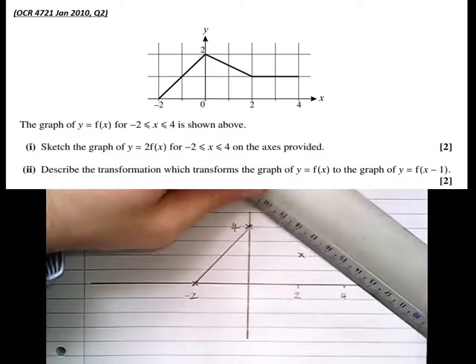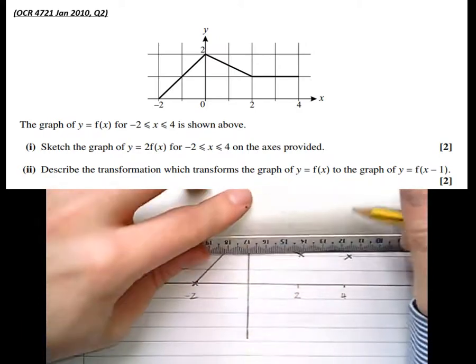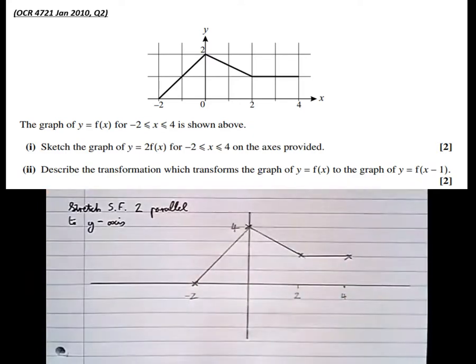So it's exactly the same graph with all the y coordinates having been doubled. Doing it in pencil in case it goes wrong. So that if it does, we can draw it again. And there's that graph there.